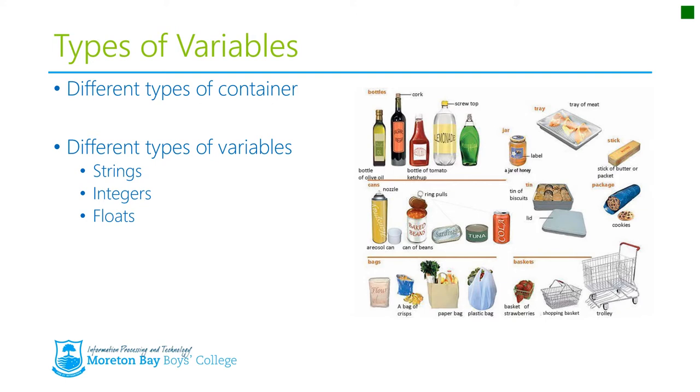The three basic containers that we're going to be looking at for variables are strings, integers, and floats. And I'm going to look through each one of those now, and explain what they're used for and what makes them different from each other.